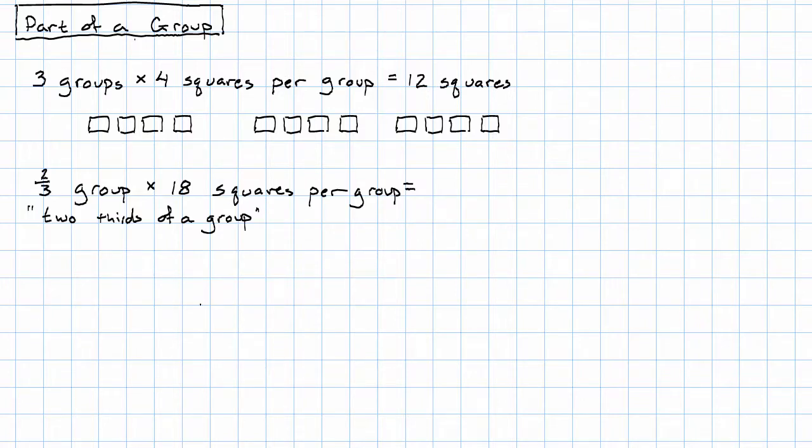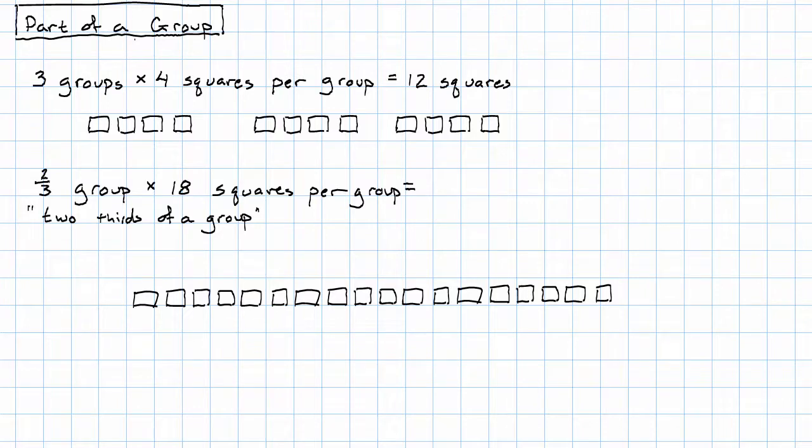Well, let's think about 18 squares. Here's a group of 18 squares. How would we take two thirds of that group?